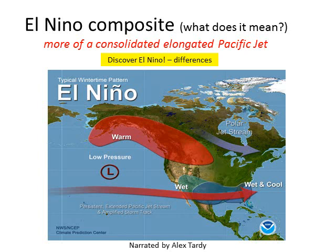We often hear El Niño and associate it with rain, especially in California and above-normal rainfall. What El Niño really is, is warm sea surface temperatures in the equatorial Pacific Ocean. Those interact with the atmosphere, and when the two work together, you get a more consolidated jet stream across the Pacific — not more tropical moisture, but a more consolidated, elongated jet stream that brings more storms to the southern portion of the lower 48.